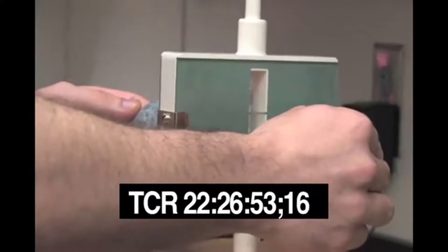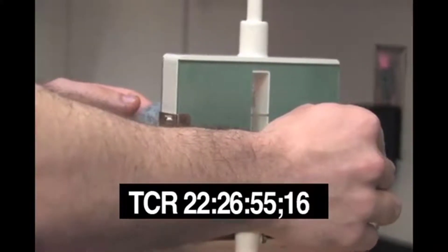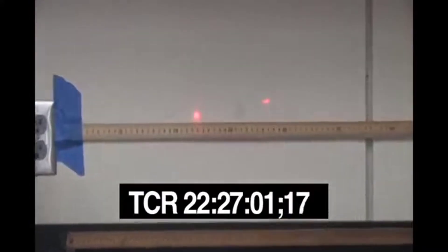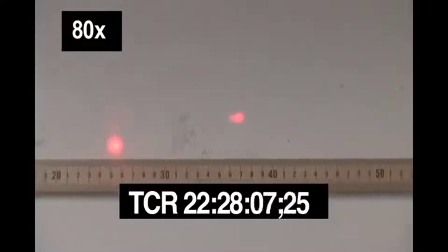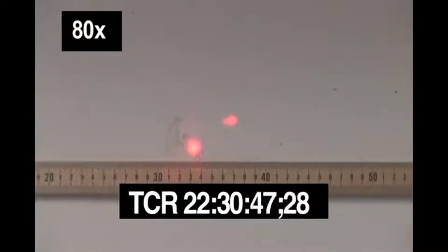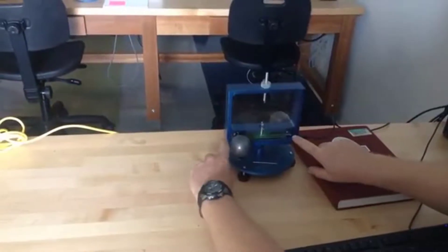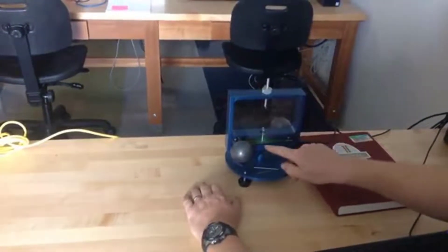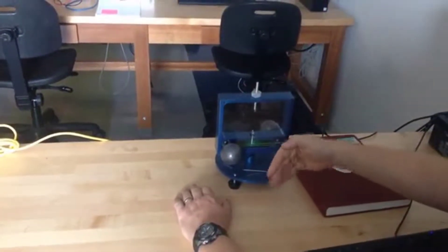Here's a student performing the experiment with a commercially available rig. He gets extremely reliable results, and as you can see, the key is that this device has the torsion assembly isolated from any air currents behind a plastic panel. Here's another example of one of these commercially available devices. If you want to repeat this experiment yourself, I would suggest picking one of these up.